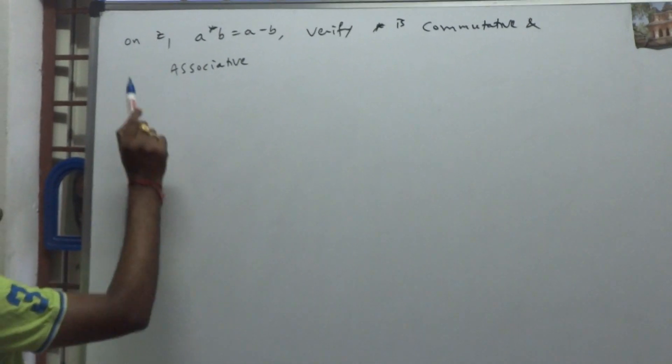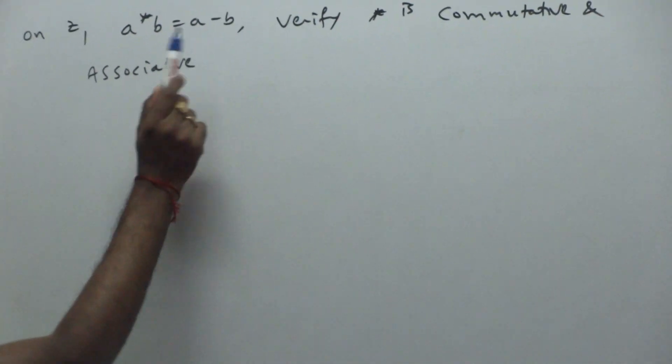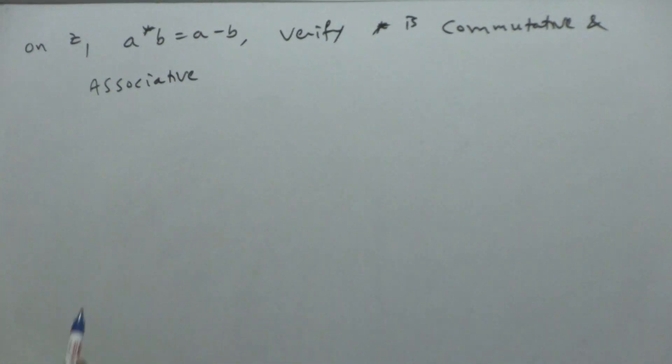Given question is, on Z, A star B is A minus B. Verify star is commutative and associative.